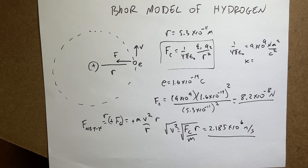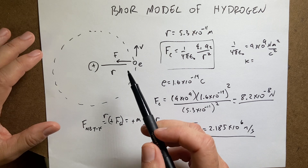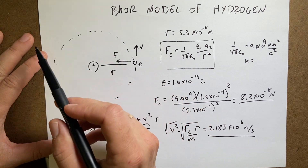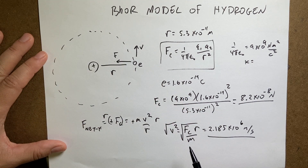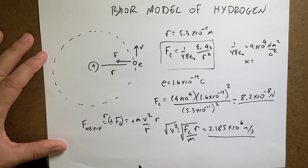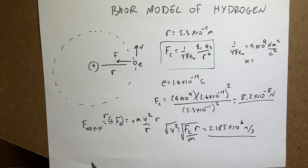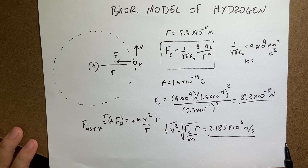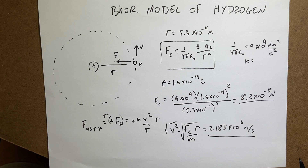However, there are things that don't work. One of the biggest problems is that a negative charge moving in a circle has acceleration, and accelerated charges produce electromagnetic radiation. So the electron would radiate energy and spiral inward, causing the atom to collapse — but that doesn't happen. Hydrogen is stable. That's the Bohr model problem. We'll do another physics problem later.